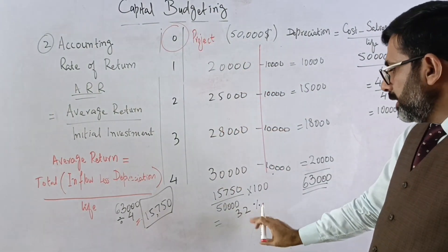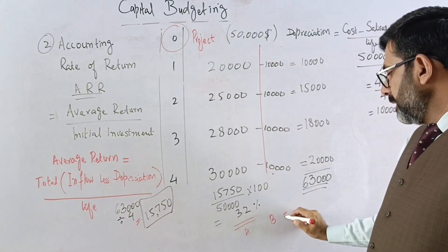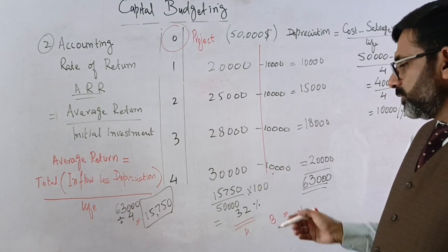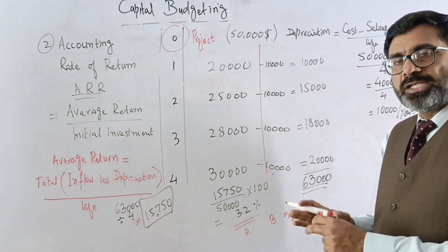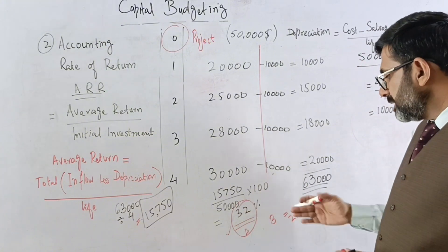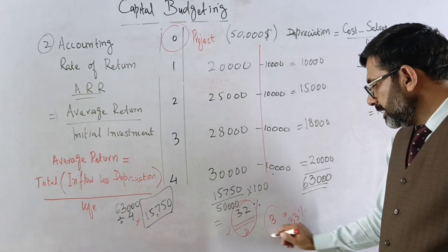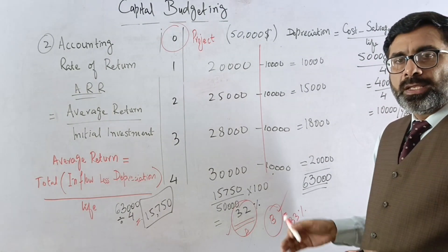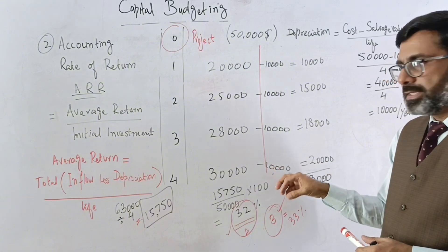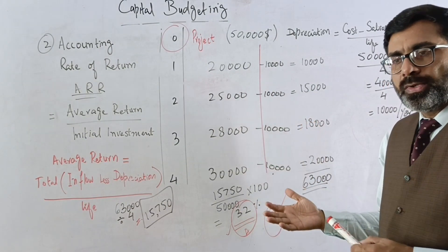The accounting rate of return is 32%. If Project B has a return of 21%, then 32% is obviously better, so we accept that project. But if Project B gives 33%, then we select Project B. This is how we calculate ARR using inflows and depreciation.